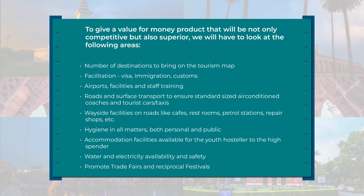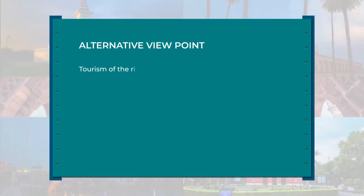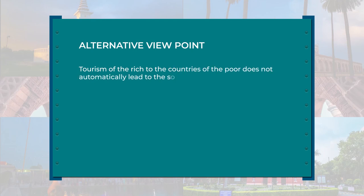Accommodation facilities should be available ranging from youth hostels to elite high-spender accommodation, with water, electricity, and safety measures. Trade fairs and reciprocal festivals should be promoted. India needs to improve airports at tourist destinations with the introduction of air taxis and more private airlines. India does offer a variety of attractions but is using its resources very ineffectively; part of the problem lies in the shortcomings of the approach adopted to market tourist products overseas. Regarding the alternative viewpoint: tourism of the rich to the countries of the poor does not automatically lead to the solution of economic problems or developmental objectives.